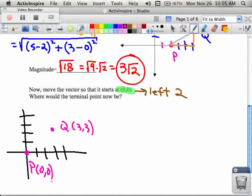And so my vector is now going between 0, 0 and 3, 3. So the terminal point, that's what they were asking for, 3, 3.